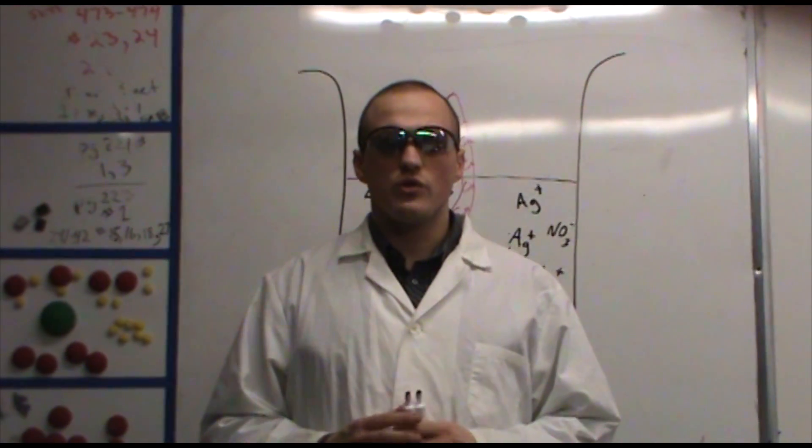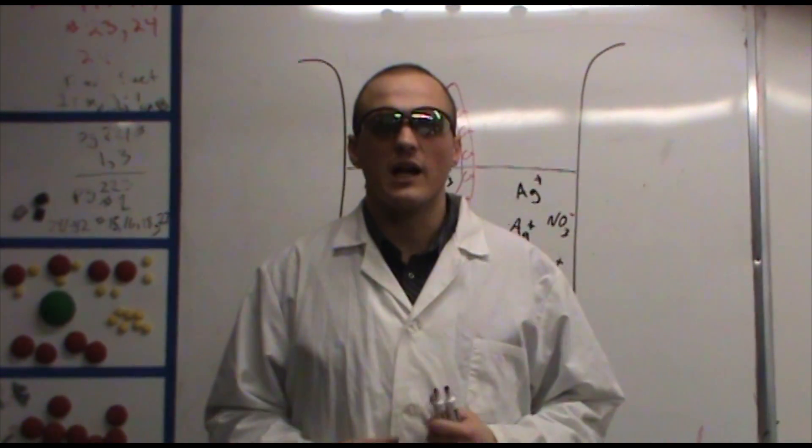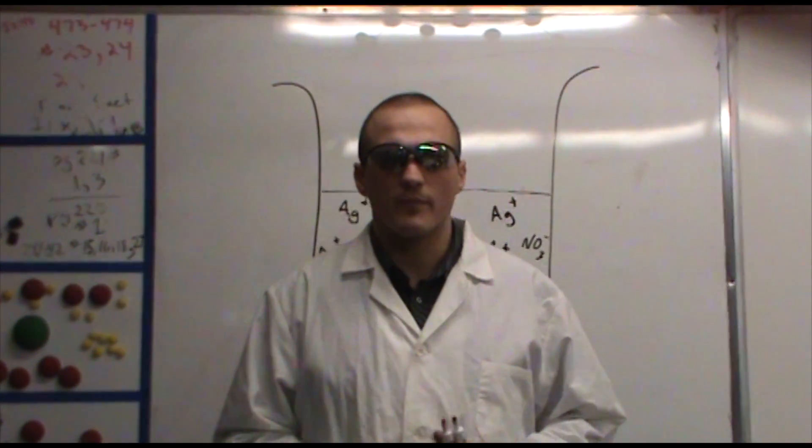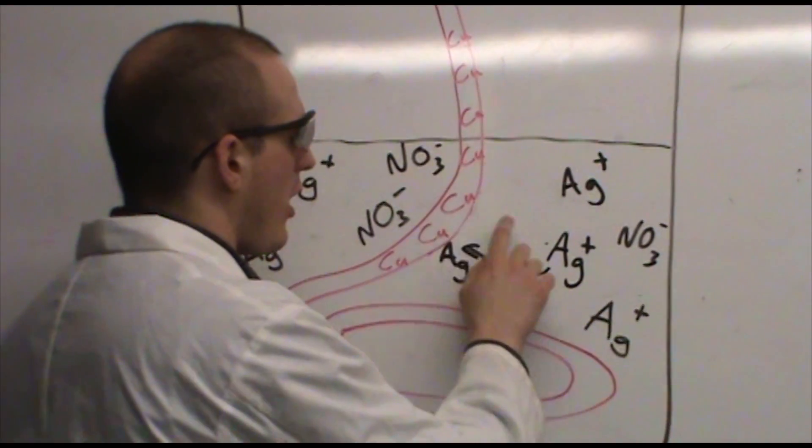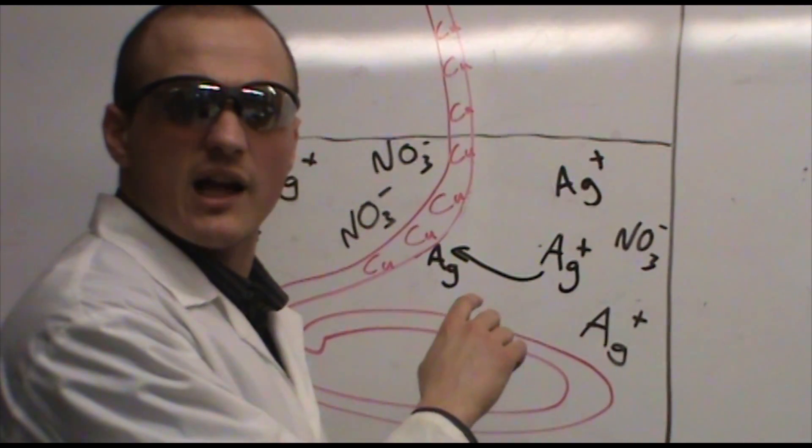The electron transfer theory is used to explain how and why electrochemical reactions occur. What we're seeing is a transfer of electrons from the copper to the silver cations in solution.